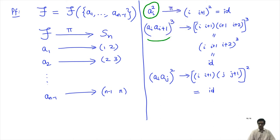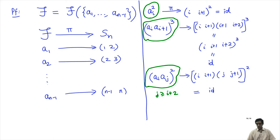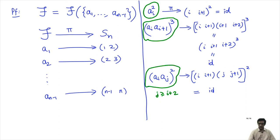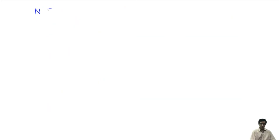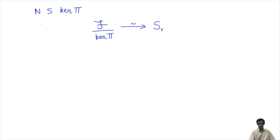So ai² is in the kernel, (ai · a(i+1))³ is in the kernel, and (ai · aj)² is in the kernel for j at least i+2. Therefore the normal subgroup N generated by these elements is certainly contained in the kernel of π. From F modulo the kernel there is an isomorphism to Sn, and since N is contained in the kernel, from F/N to Sn there is a surjection.